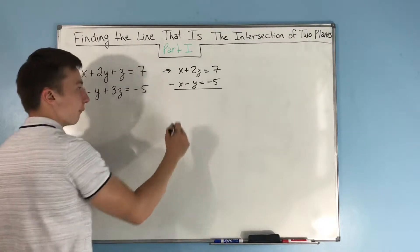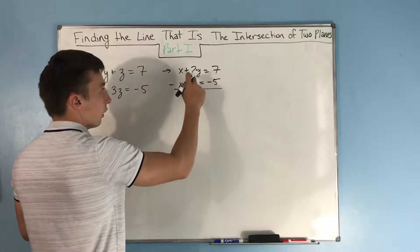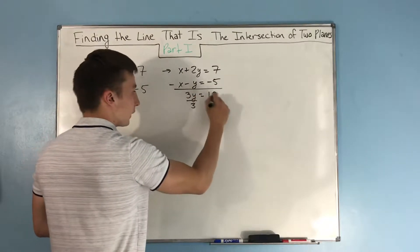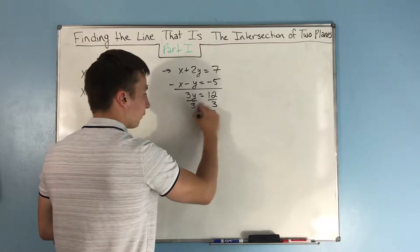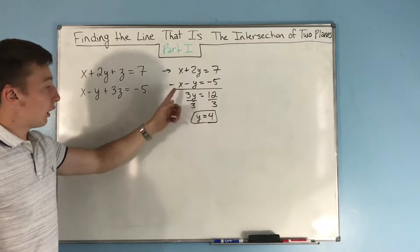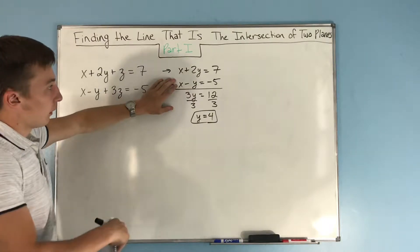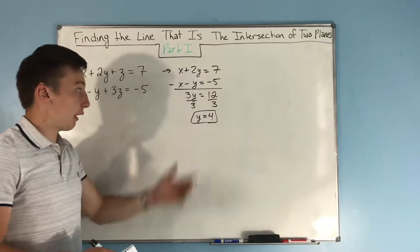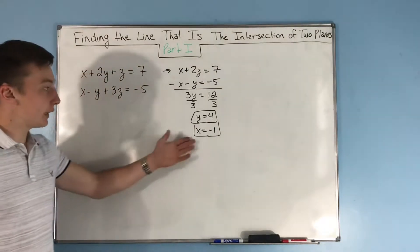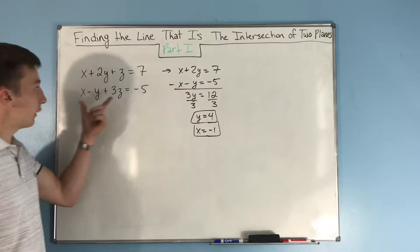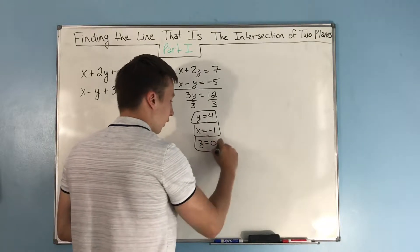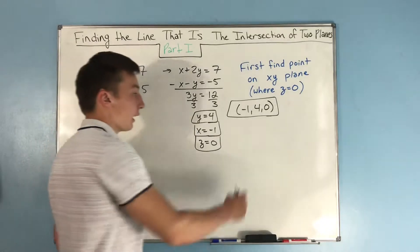We can subtract these equations. x minus x is zero, 2y minus negative y will be 3y, and 7 minus negative 5 will be 12. Divide by 3 on both sides and you get y equals 4. If y equals 4, then x minus 4 equals negative 5, so x will have to be negative 1. We already know z equals zero because we're on the xy plane. So our point is negative 1, 4, 0.